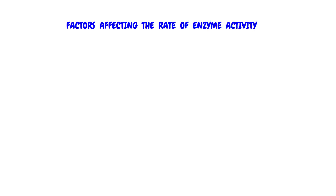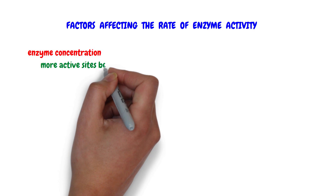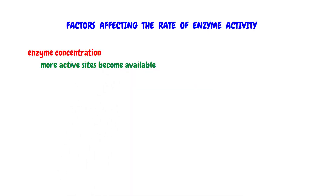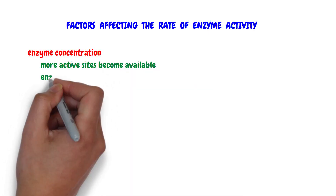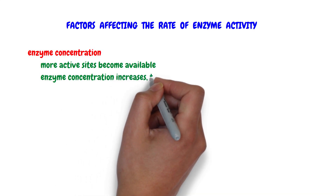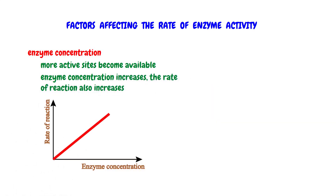The first factor is enzyme concentration. As the enzyme concentration increases, the enzyme's catalytic activity also increases because more active sites become available where the substrate can bind. So as the enzyme concentration increases, the rate of reaction also increases as shown by this graph. The red line indicates the relationship between the change in enzyme concentration and the rate of reaction.